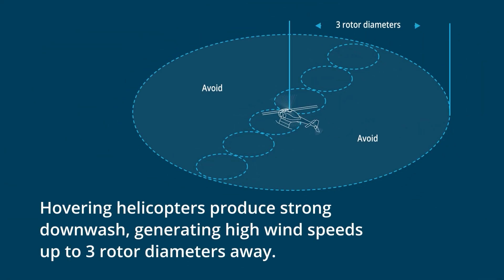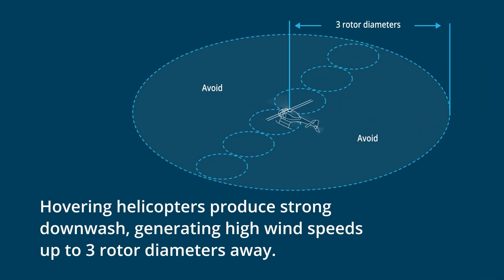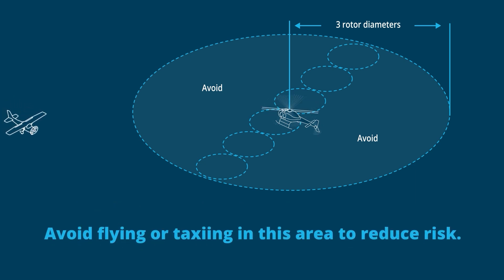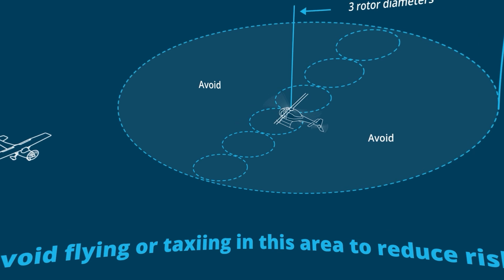Hovering helicopters produce strong downwash, generating high wind speeds up to three rotor diameters away. Avoid flying or taxiing in this area to reduce risk.